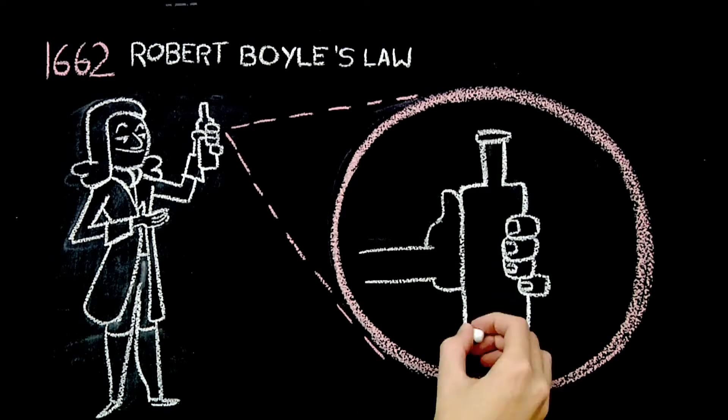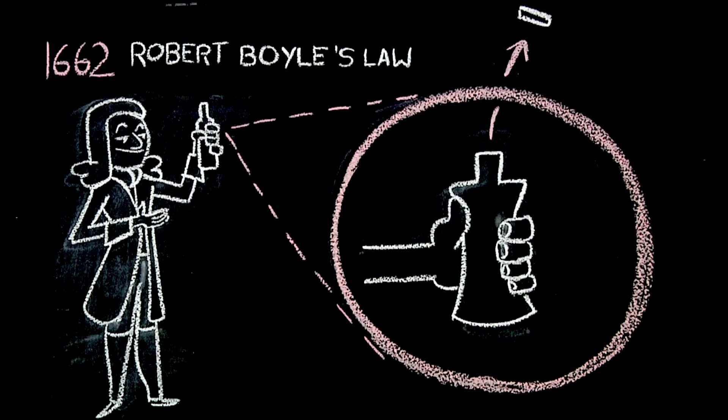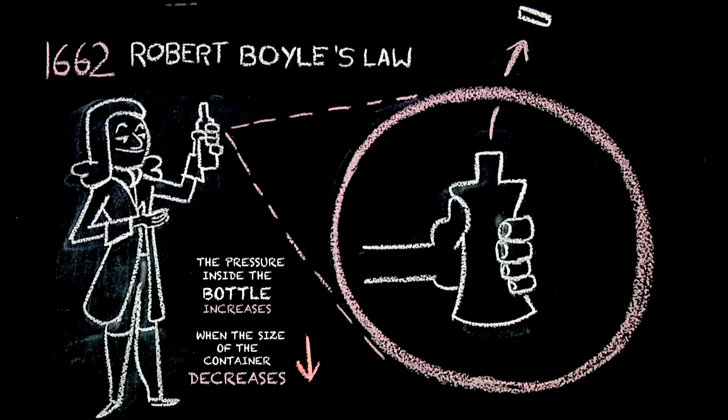Take an empty bottle and put the cap on it, closing that container. Now squeeze your bottle, and what happens? The pressure inside the bottle increases when the size of the container decreases. You can only crush that container so much until the gases inside push back on your hand.